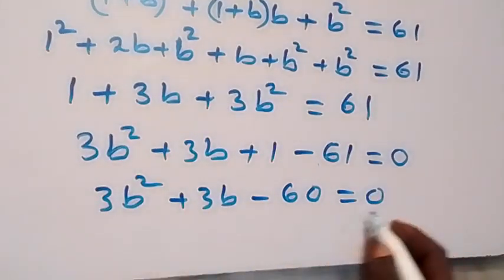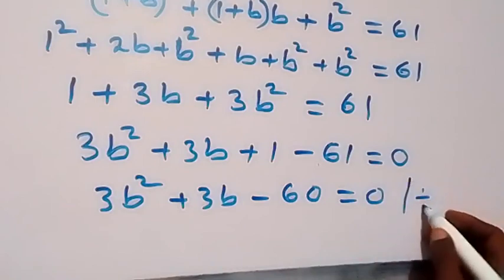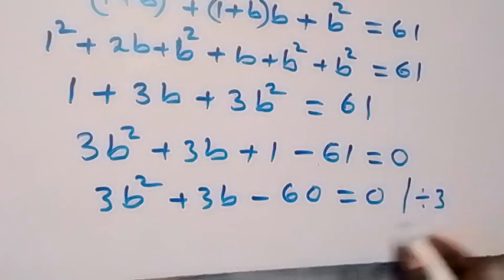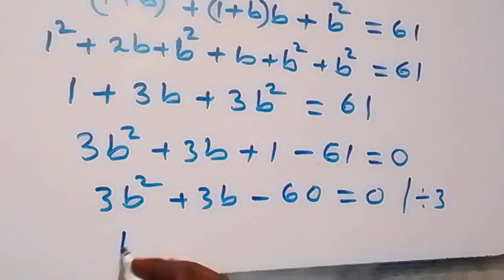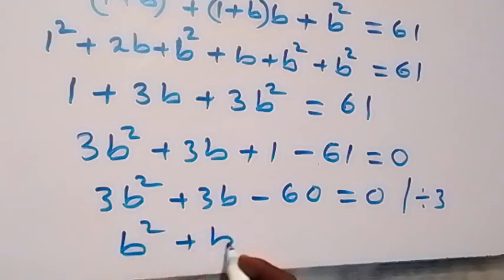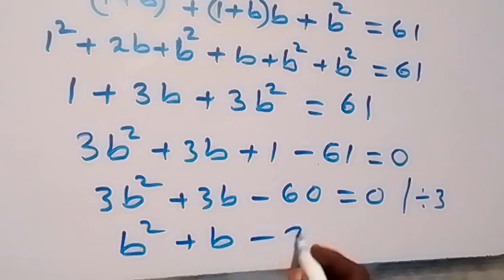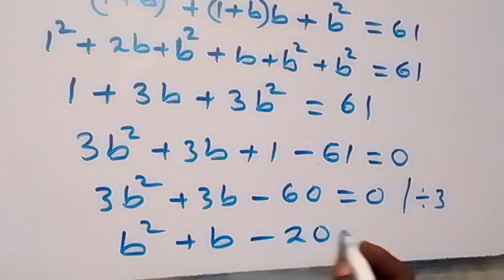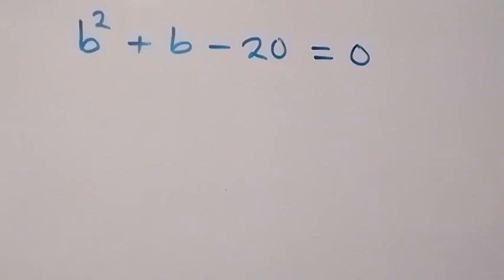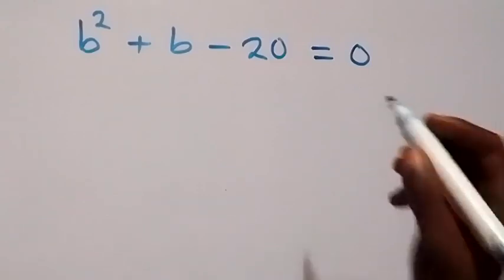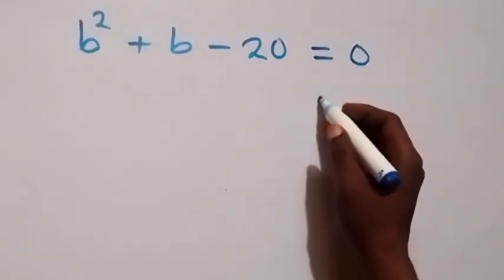Simplifying: 3b squared plus 3b minus 60 equals 0. Dividing through by 3, this reduces to b squared plus b minus 20 equals 0.